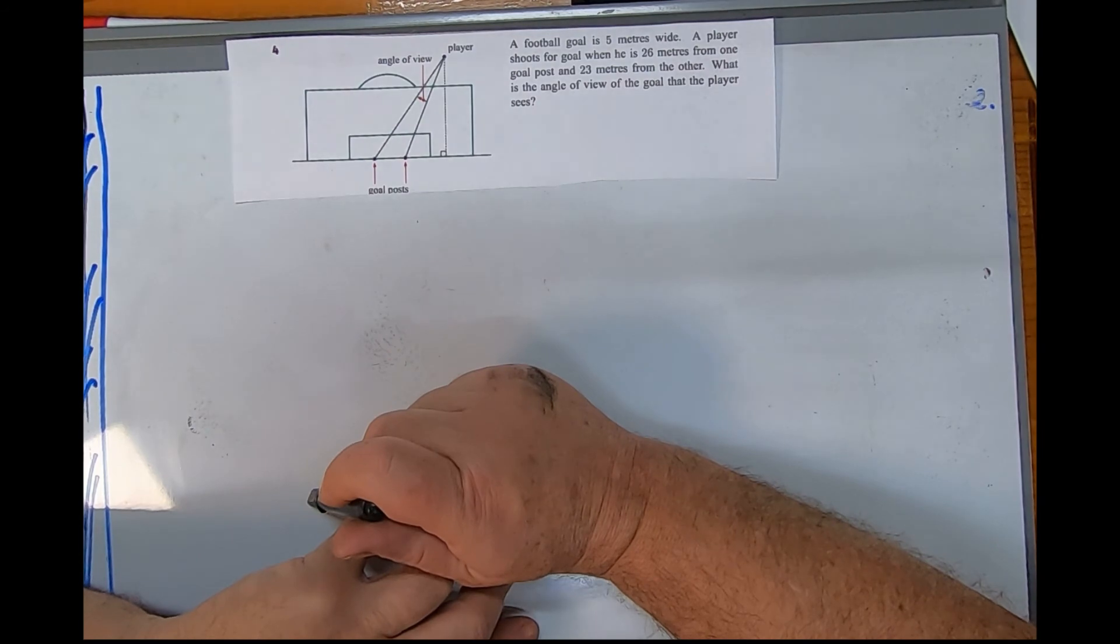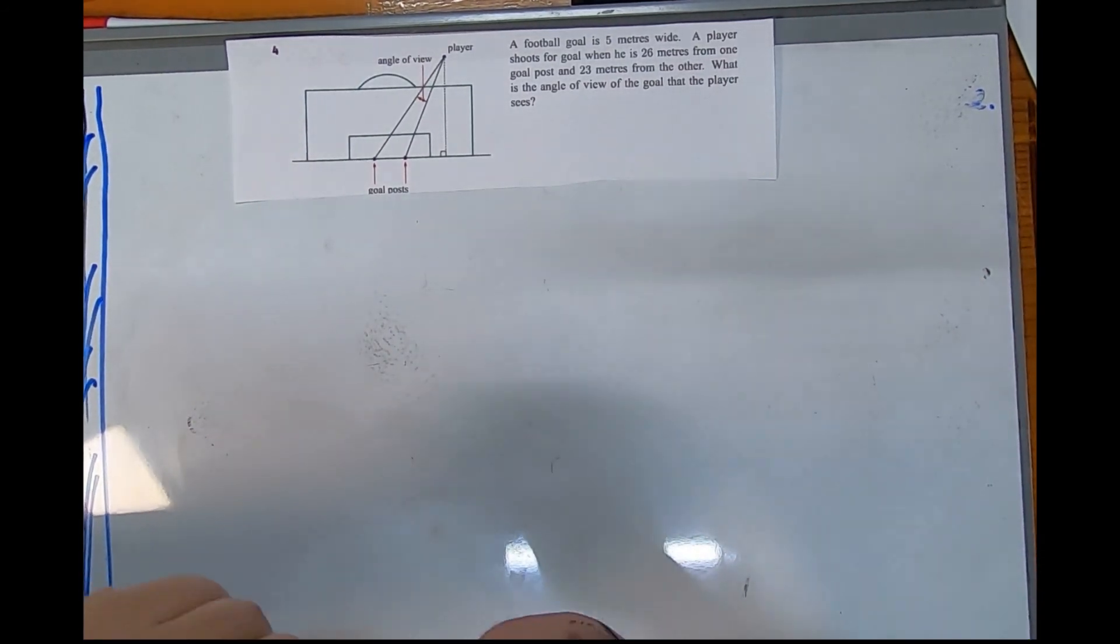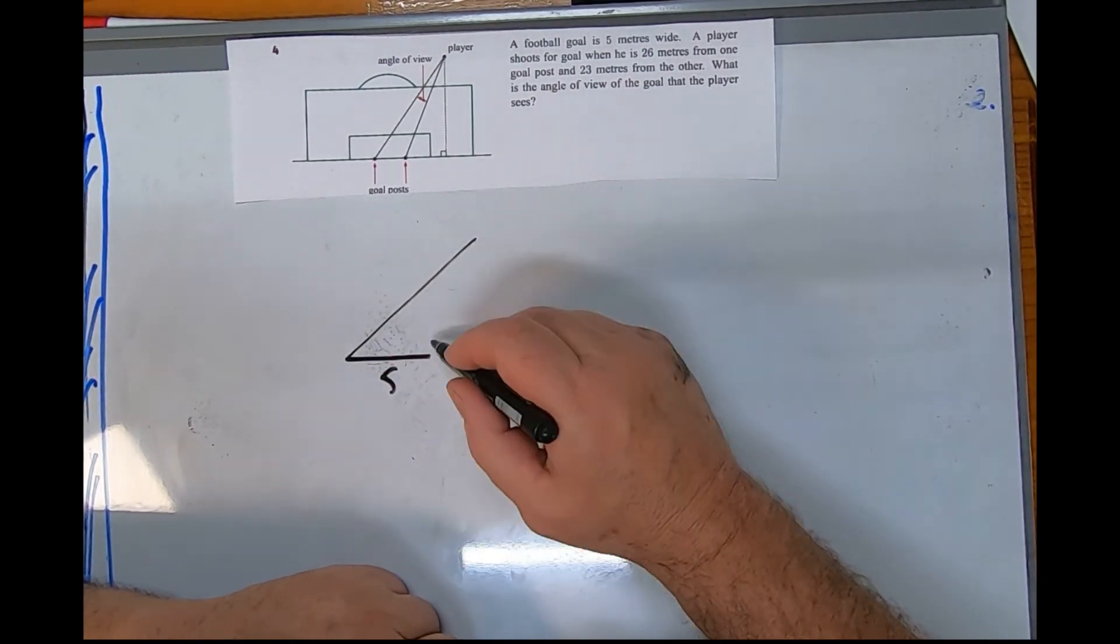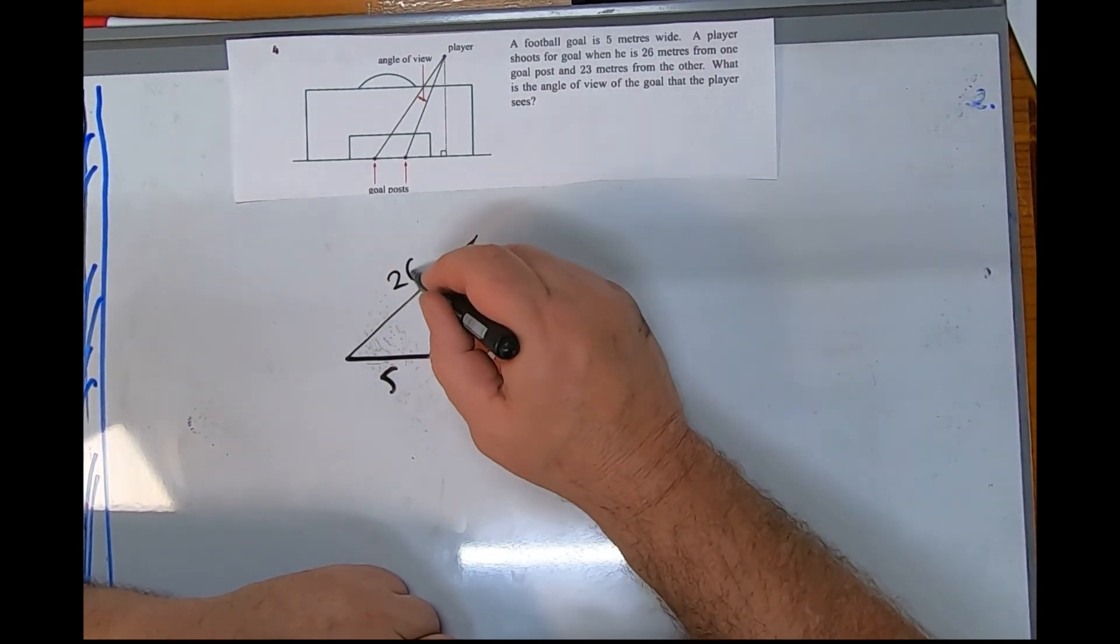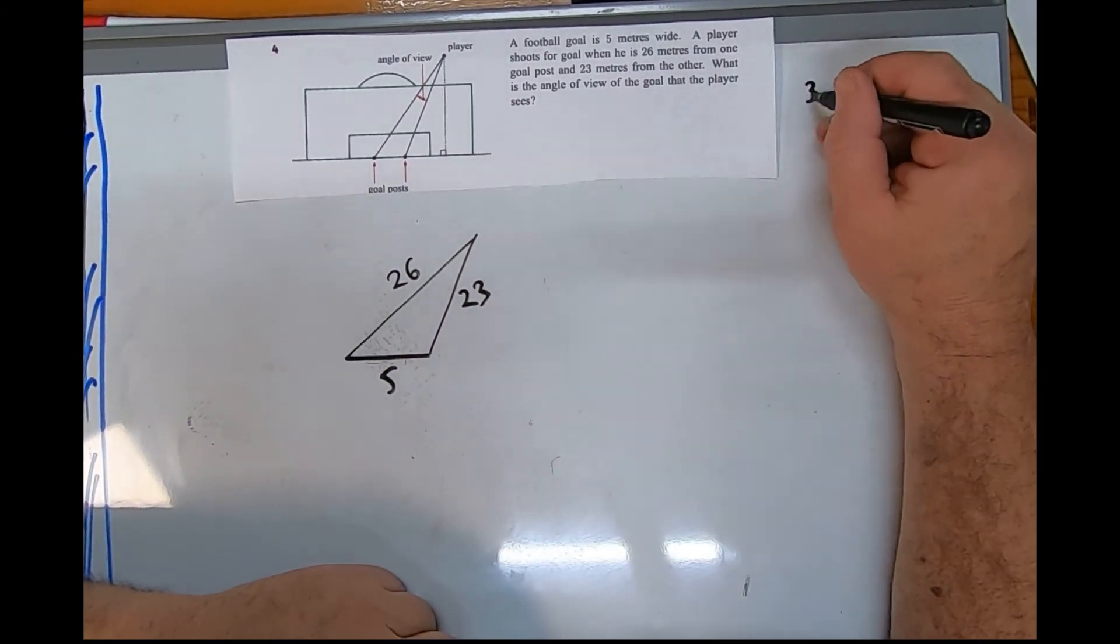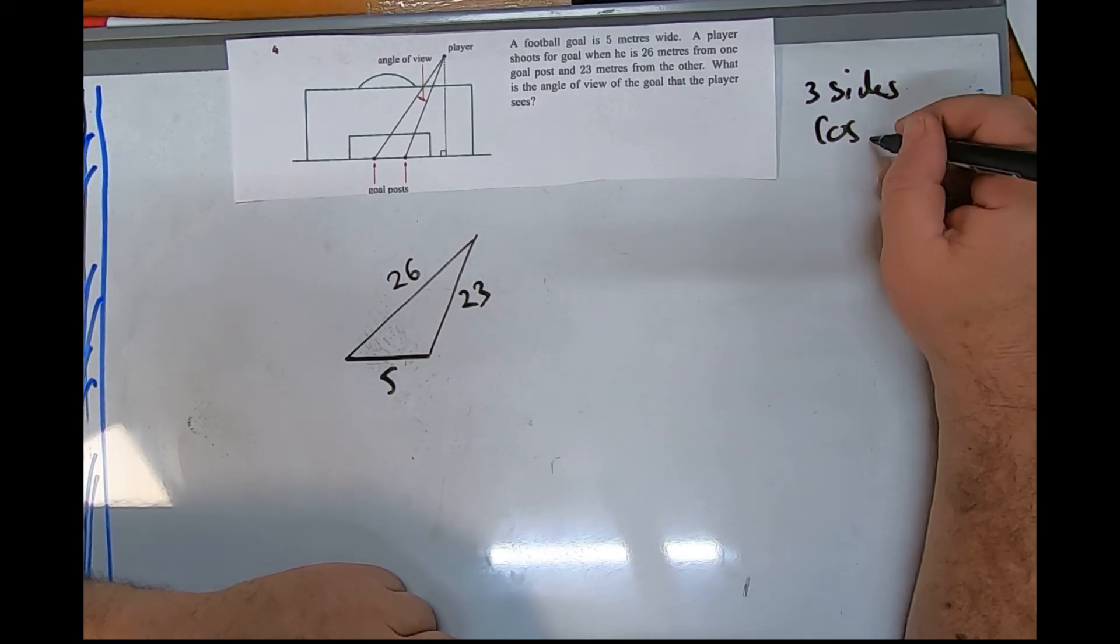What's the angle of view? So we've got five meters, and it looks like the longer one there because I've got that far. So I can instantly see three sides, I'm going to do the cosine rule.